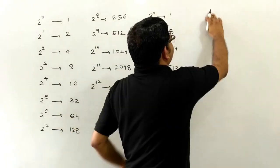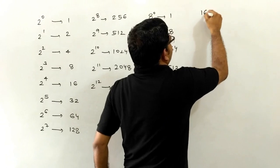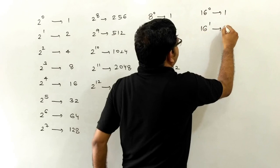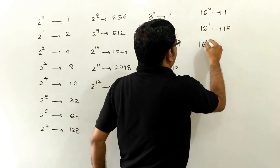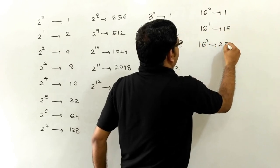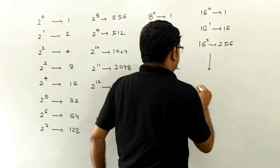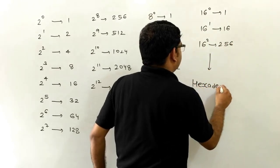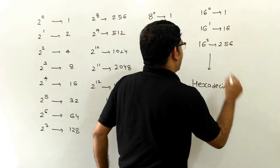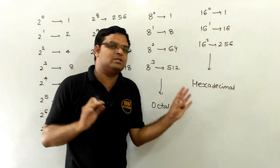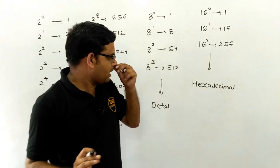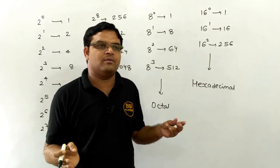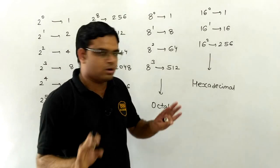For hexadecimal conversion: 16 raised to power 0 is 1, 16 raised to power 1 is 16, and 16 raised to power 2 is 256. All these values will help us whenever we convert any number into hexadecimal. For the time being, just write all these values in your notebook — they will help you whenever we solve question papers.